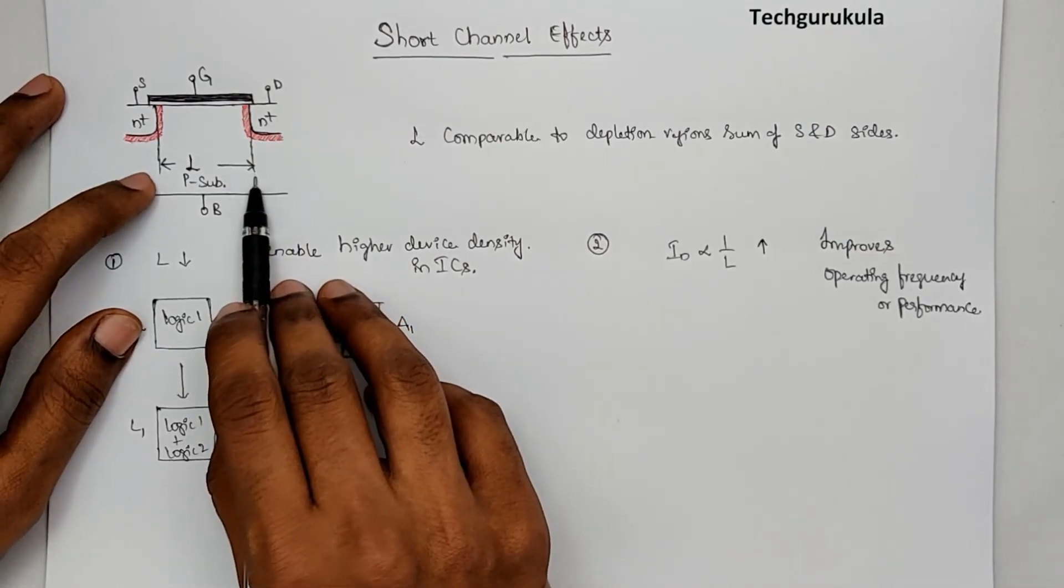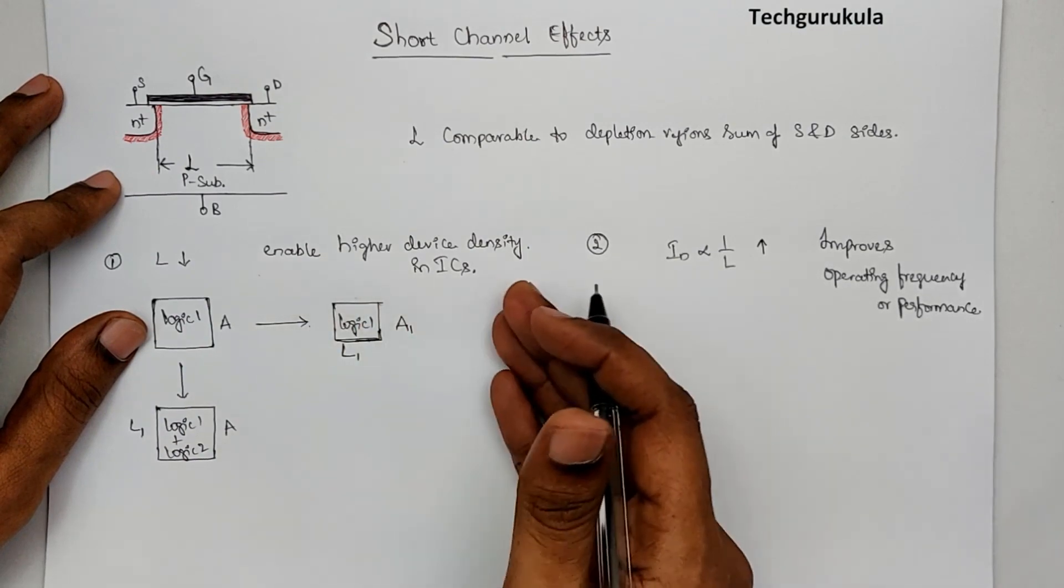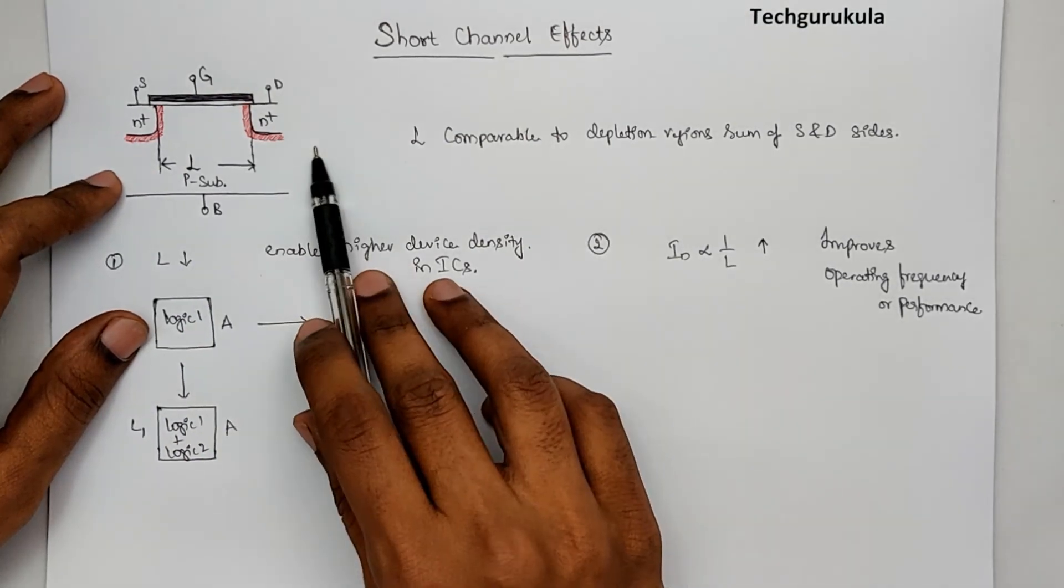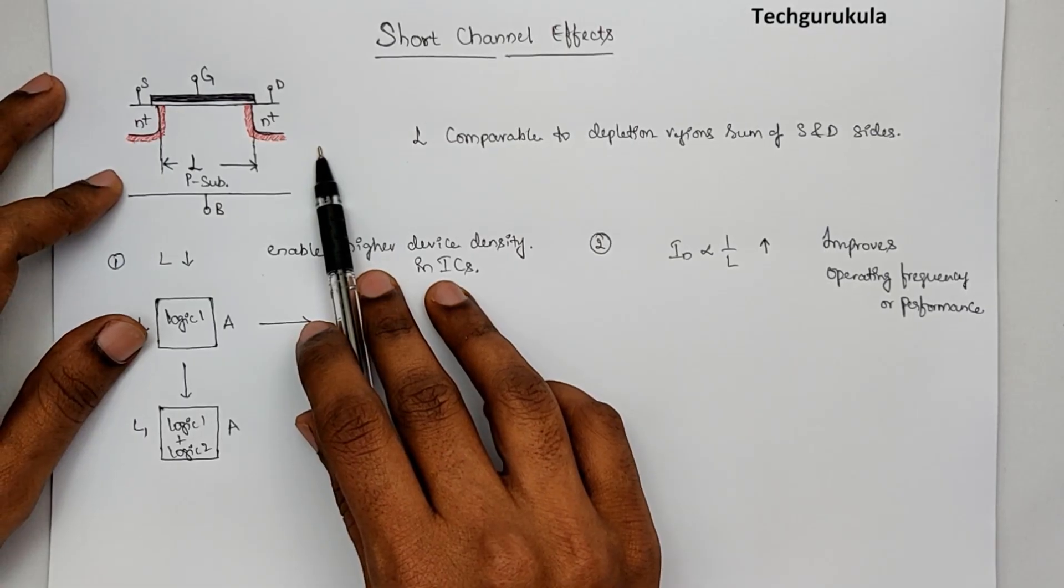And there are so many short channel effects. We would discuss them in sequence. For example, drain-induced barrier lowering, bulk punch-through, threshold voltage reduction, hot carrier effect, and so on.